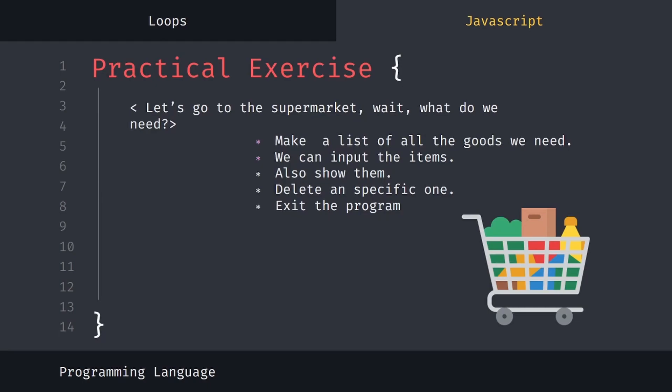Now we need to make a practical exercise. Let's go to the supermarket — we need to make a list of all the goods. We get input from the user for items, show them the list of items, delete any item by its number, and finally exit. We're using arrays and iterating over them, so it's very useful to practice your programming skills.